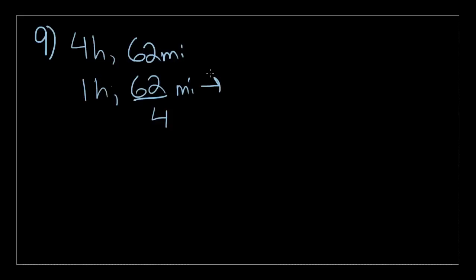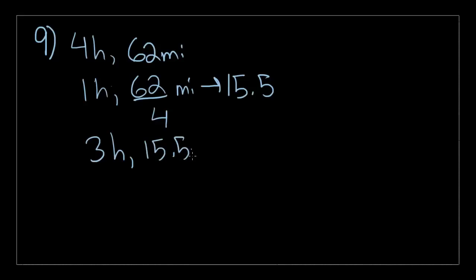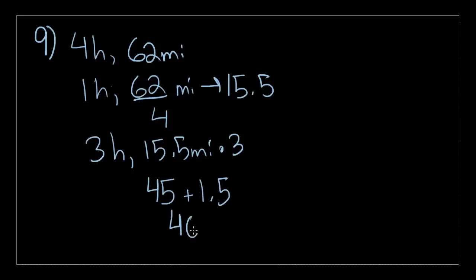60 divided by 4 is 15, and 2 divided by 4 is a half, so that's 15.5 miles per hour. Therefore, 3 hours will be equal to 15.5 miles times 3. That is equal to 45 plus 1.5, which is 46.5. So if it traveled at this constant speed for 3 hours, it would travel 46.5 miles.